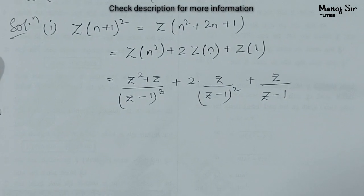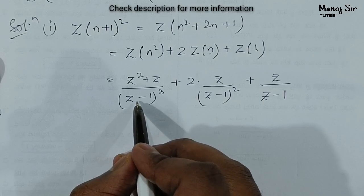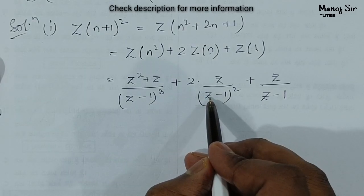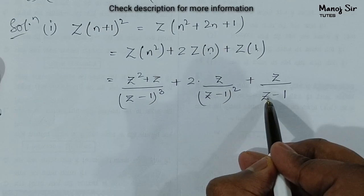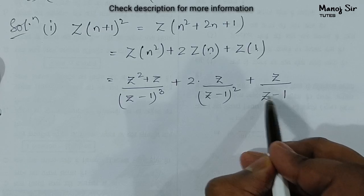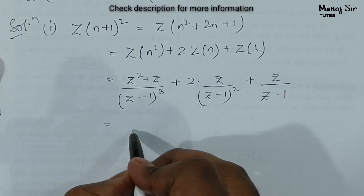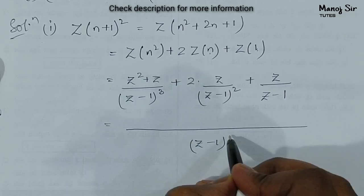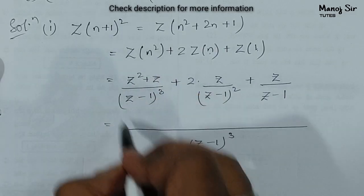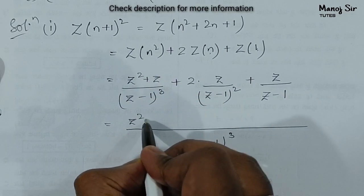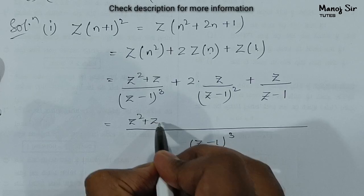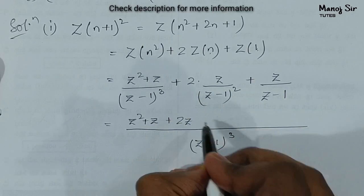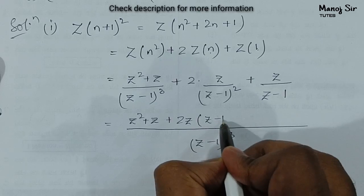Now we can see the denominators are (z−1)³, (z−1)², and (z−1). So we take the LCM as (z−1)³. The numerator becomes: z²+z as it is, plus 2·z·(z−1), plus z·(z−1)².